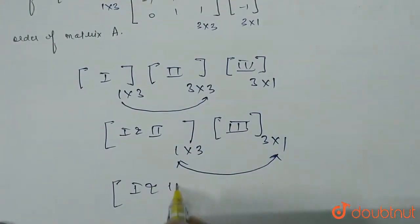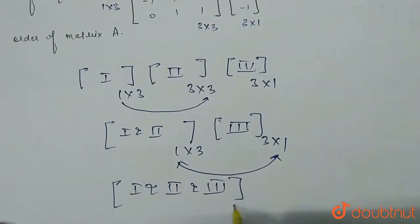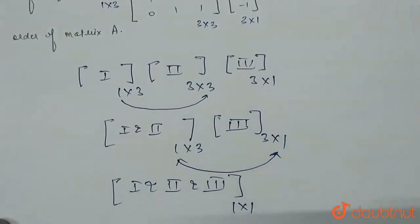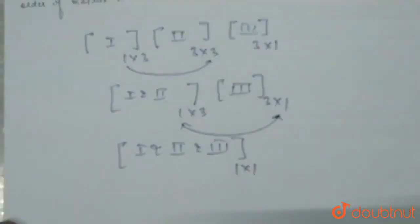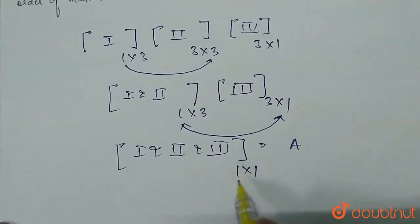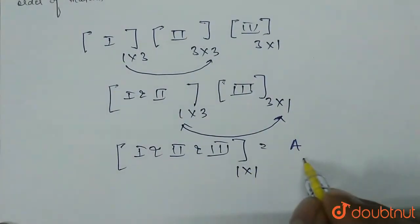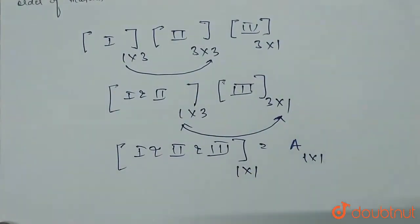So, when we multiply 1, 2 and 3, the order will be 1 cross 1. And all these multiplications equal A. So, if this matrix has order 1 cross 1, then A will also have order 1 cross 1.